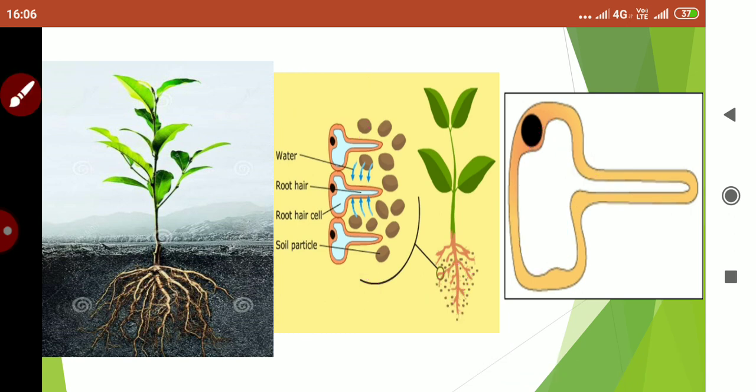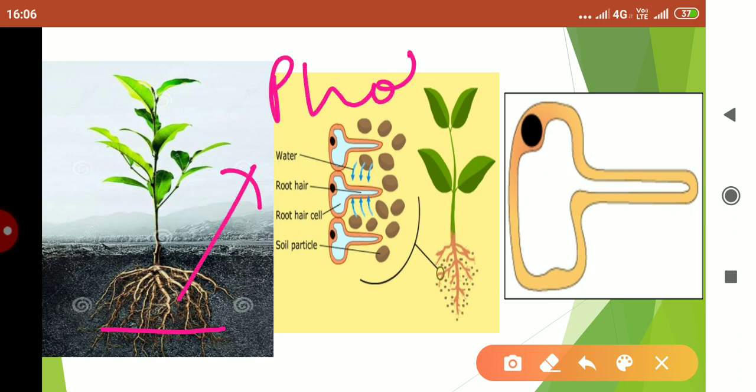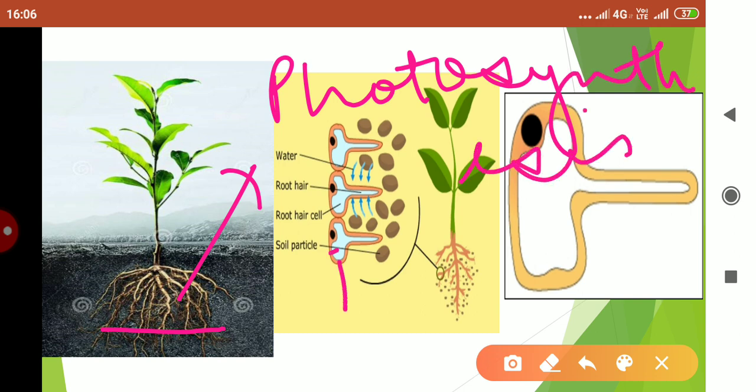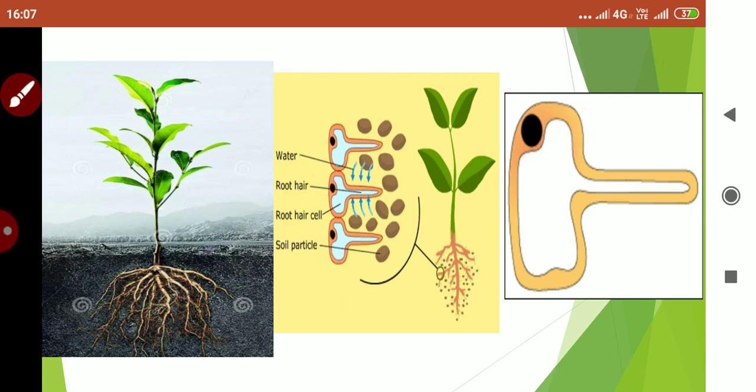You have studied in chapter cell that the structure of a cell is according to the function it performs. So children, one more thing about the root hair is that because it is present below the soil, it will not be able to perform the function of photosynthesis. Will it be? No. Therefore, chloroplast will not be present or chloroplast will disappear. I think now the adaptations is clear to you all. Now let us move on.